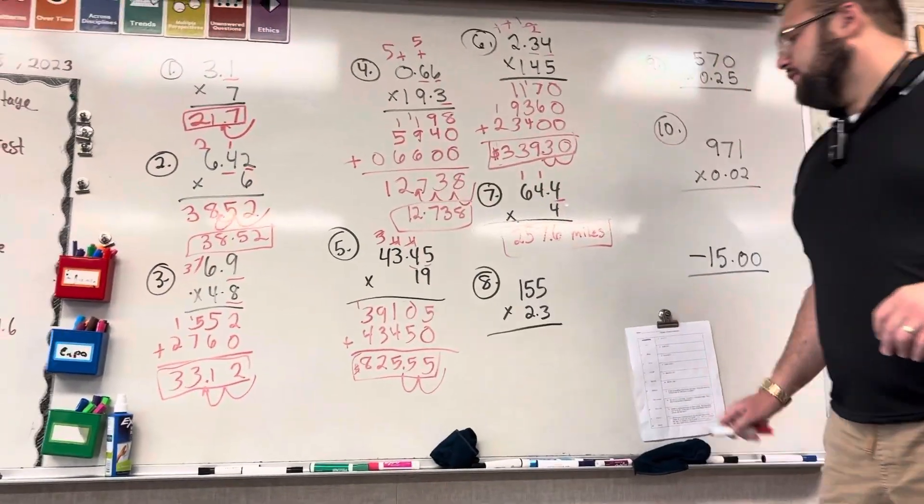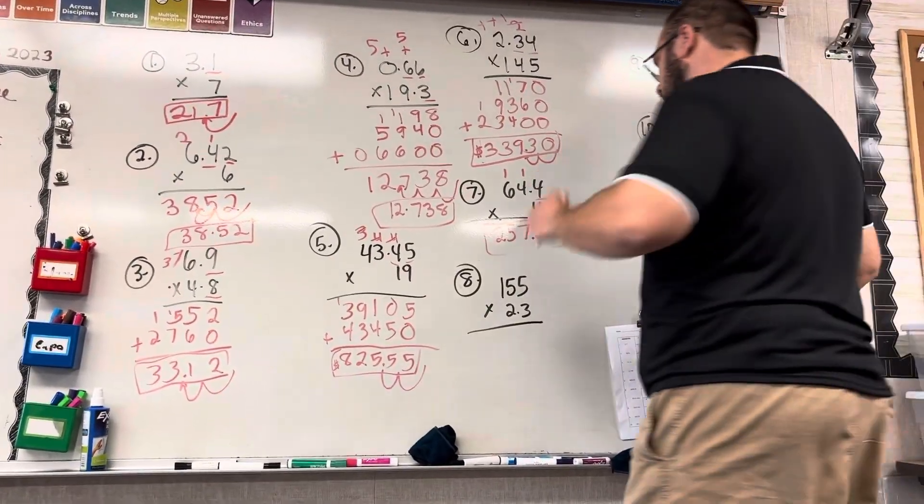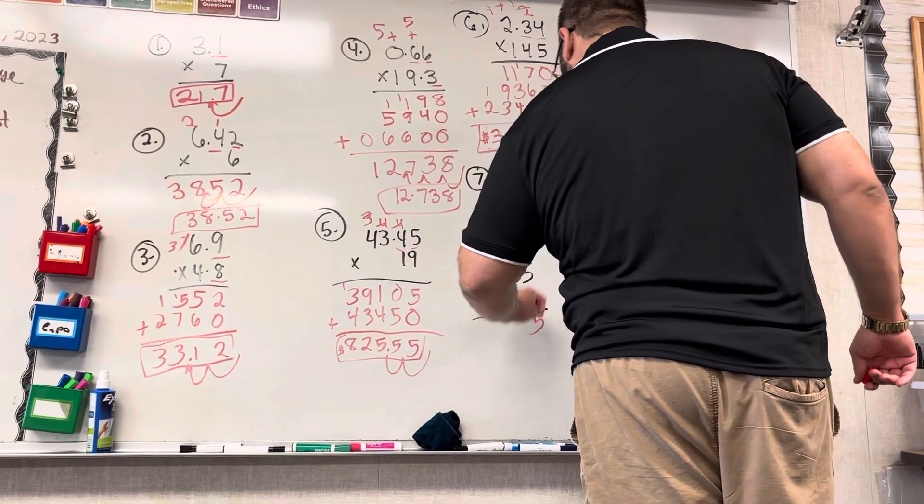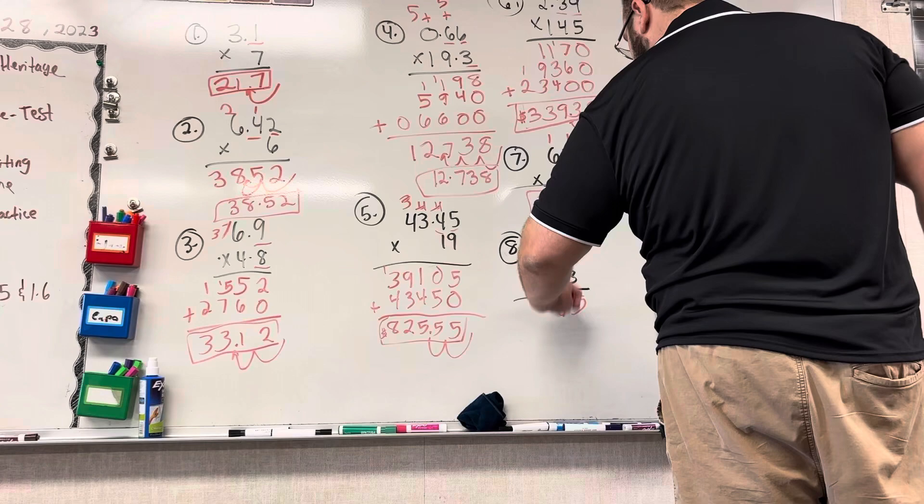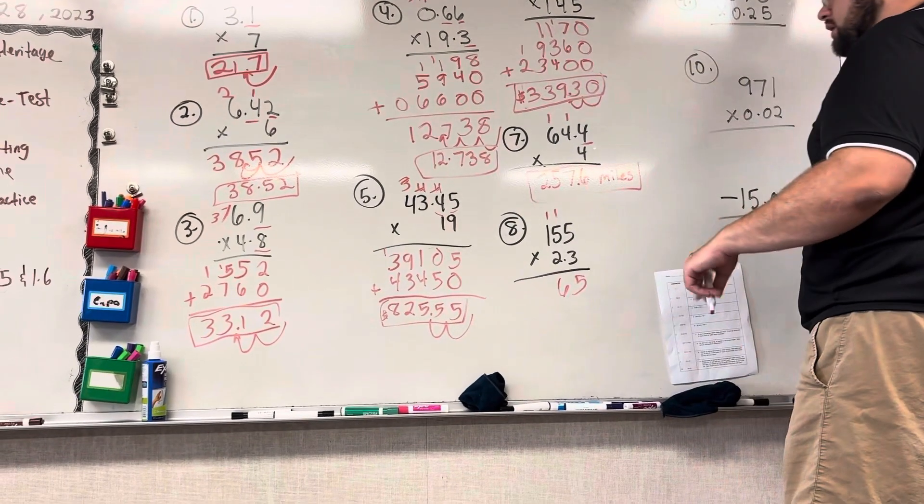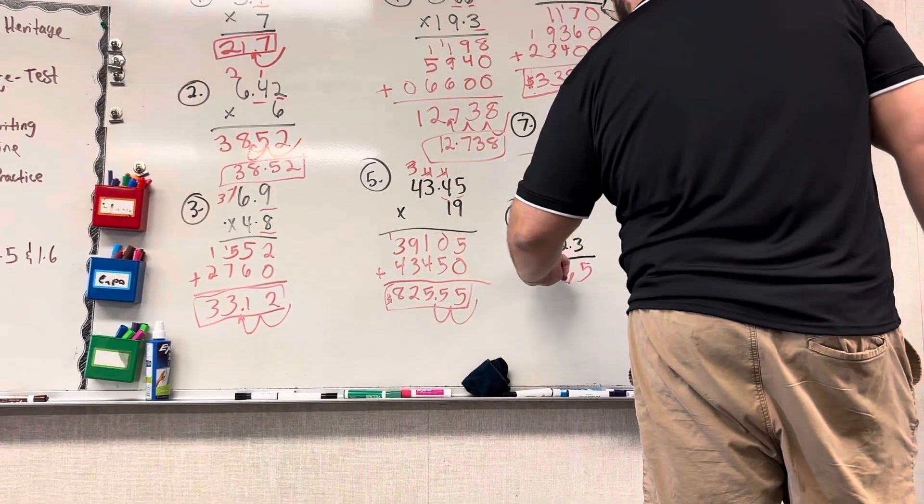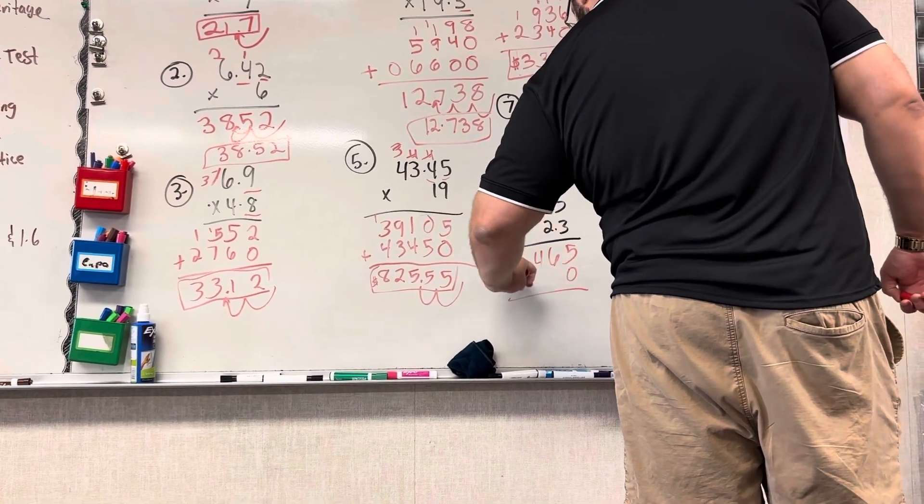Alright, so number 8. 155 times 2.3. 3 times 5 is 15, carry the 1. 3 times 5 is 15 again, plus that 1 is 16, carry the 1. 3 times 1 is 3, plus 1 is 4. Cross these out, add a 0 underneath.